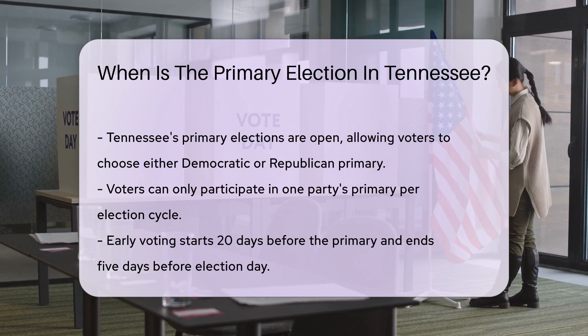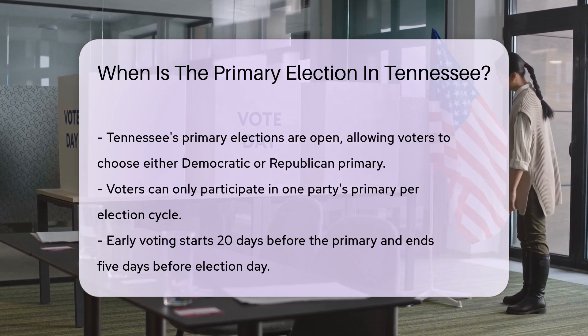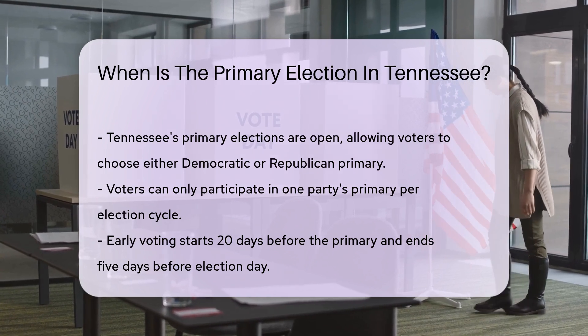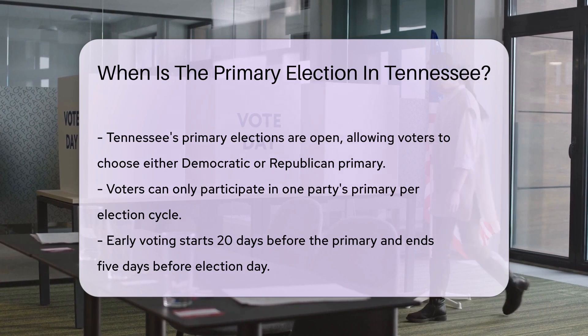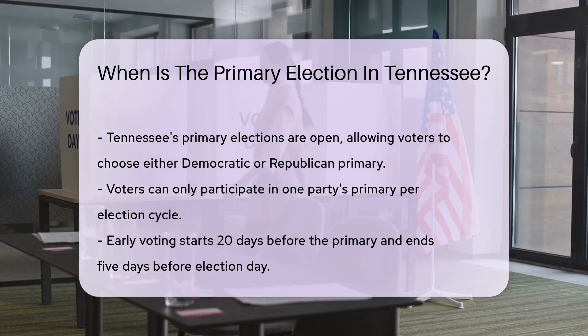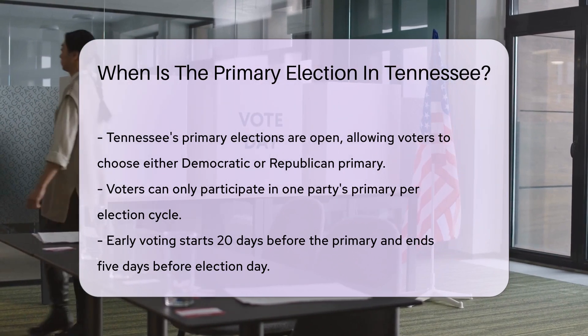Early voting is available for those who cannot vote on election day. It typically starts 20 days before the primary election and ends 5 days before election day.